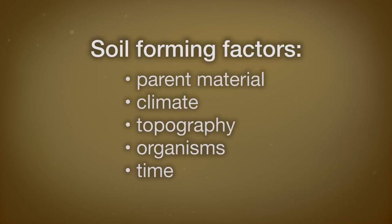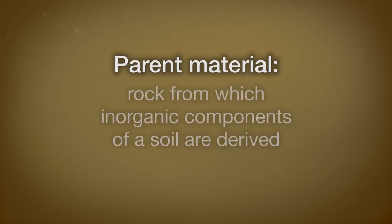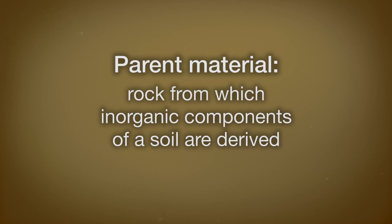There are five factors that determine the properties of soils — these are called the soil forming factors. Parent material is one of the soil forming factors. Parent material is the rock material from which the inorganic components of a soil are derived. Different soil types arise from different parent material.